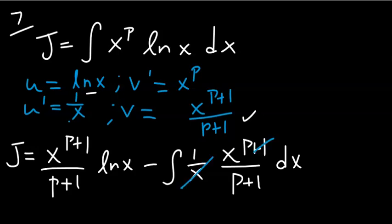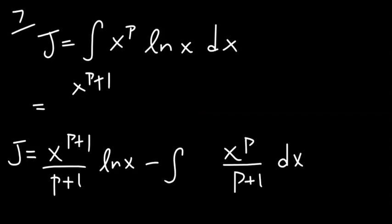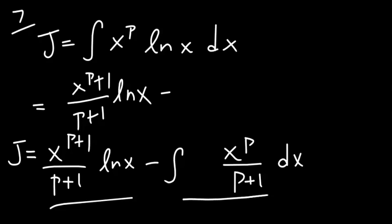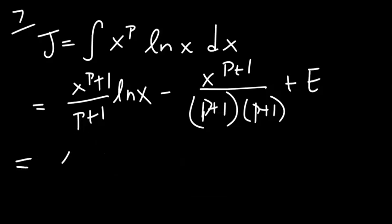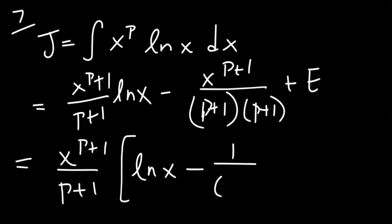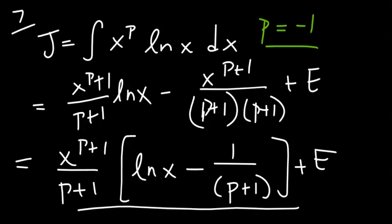The resulting integral simplifies easily: integrating x^p/(p+1) gives x^(p+1) divided by (p+1) squared, plus an integration constant e. Factoring, the final answer is x^(p+1)/(p+1) times [ln(x) minus 1/(p+1)] plus the integration constant. As noted, p equals minus 1 causes the denominator to become zero, giving an infinite result, so we treat that case separately.